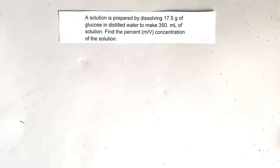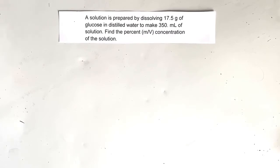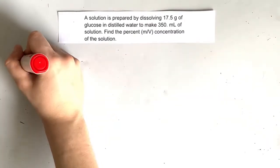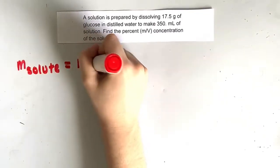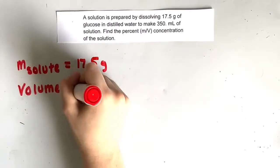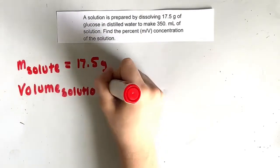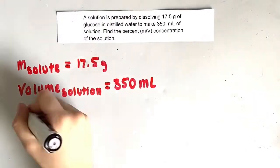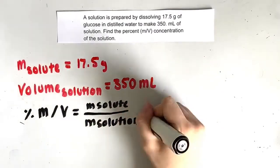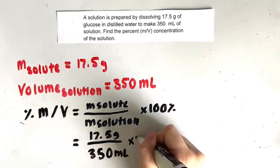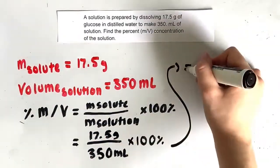Let's do an example. A solution is prepared by dissolving 17.5 grams of glucose in distilled water to make 350 milliliters of solution. Find the percent m/v concentration of the solution. We are given the mass of the solute, which is 17.5 grams, and the volume of the solution, which is 350 milliliters. Plugging that into our equation gives us a percent m/v of glucose of 5 percent.